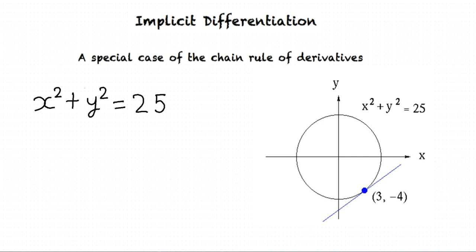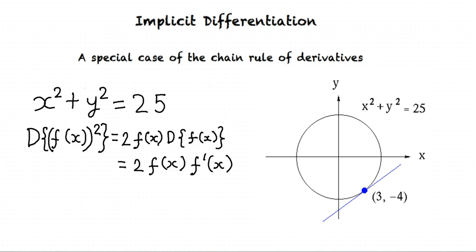Recall that derivative of a function of x squared can be found using the chain rule. d of f of x squared equals 2 f of x multiplied by d of f of x equals 2 f of x multiplied by f prime x.